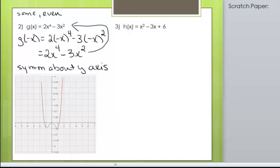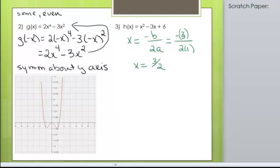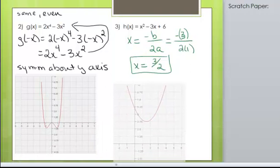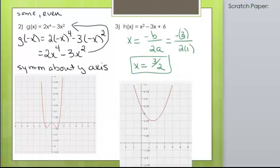How about number three? You can notice right away it's a quadratic because the highest exponent is 2. If you notice right away that it is quadratic, then you know it's symmetric about the line x equals negative b over 2a. So you get negative of negative 3 over 2 times 1 — negative of a negative is a positive, and 2 times 1 is 2. So this is symmetric about the line x equals 3 halves, which is 1 and a half, right through the middle of this parabola.